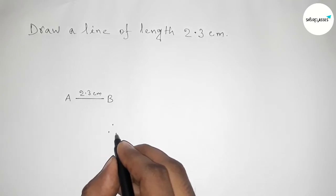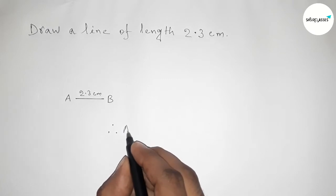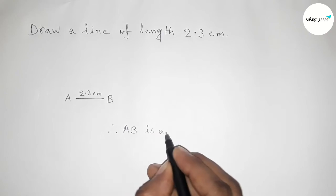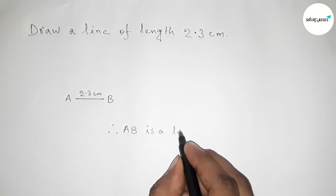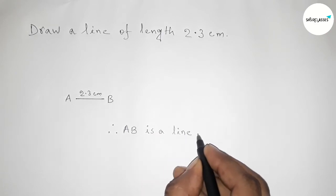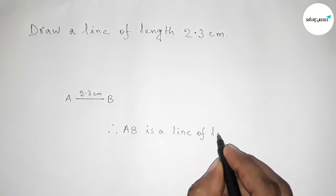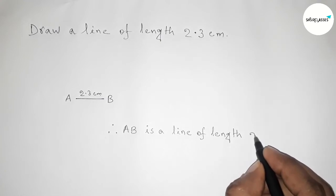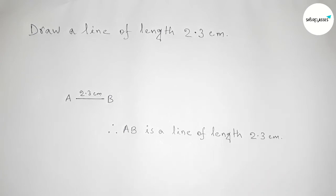Therefore, AB is a line of length 2.3 centimeters. And by this way you can draw a line of length 2.3 centimeters by using a scale. That's all, thanks for watching. If this video is helpful to you, then please share it with your friends and classmates.